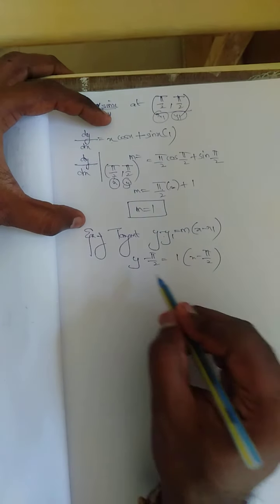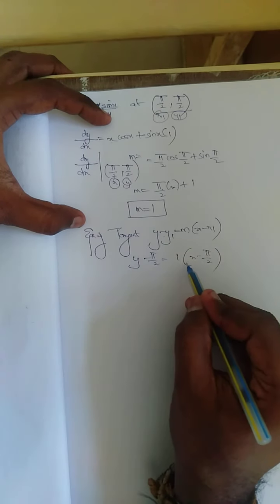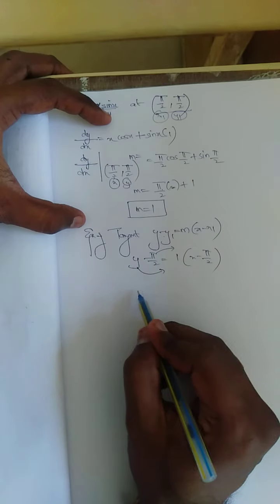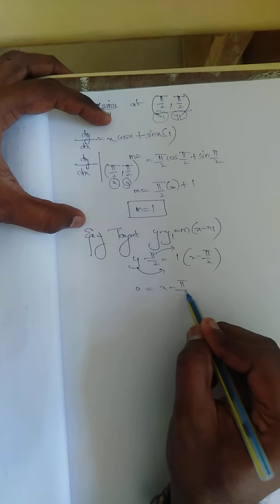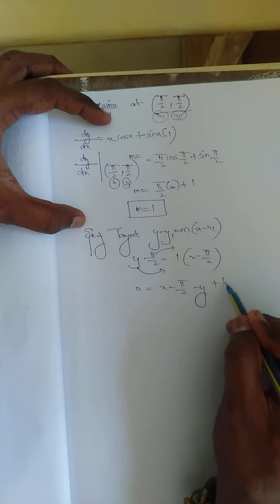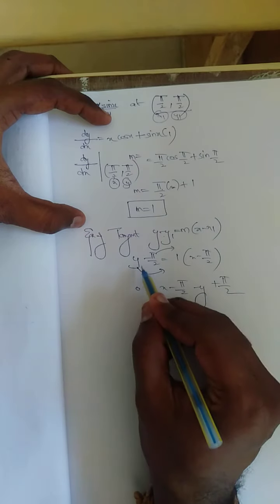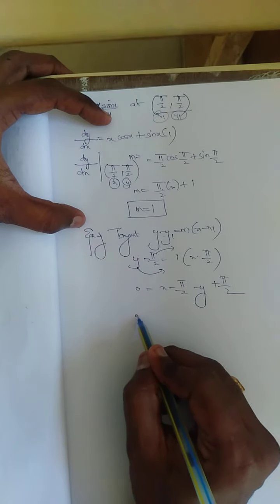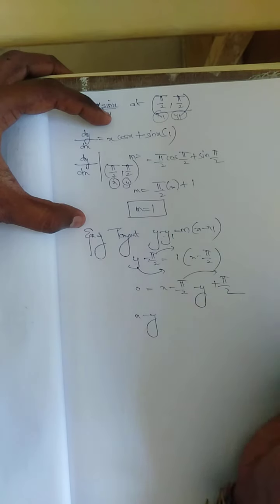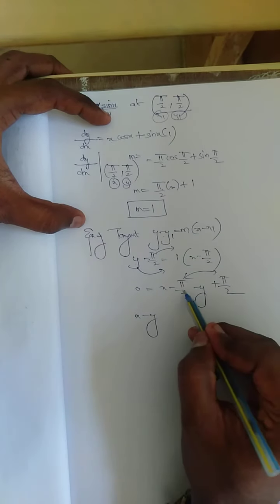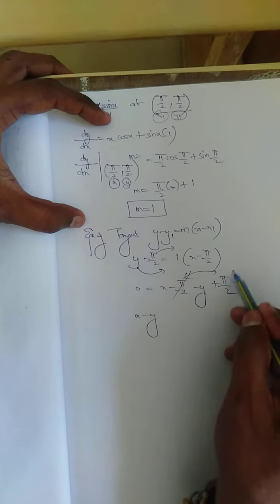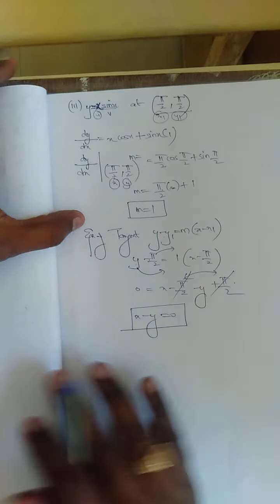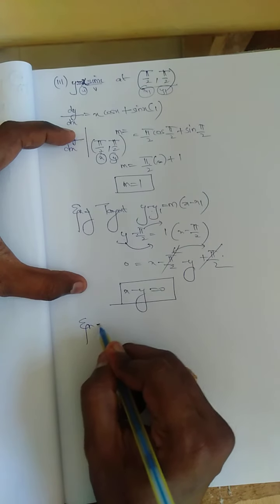Expanding: y - π/2 = x - π/2. The π/2 terms cancel, giving x - y = 0. That is the equation of the tangent.